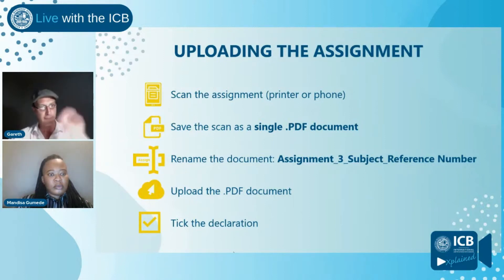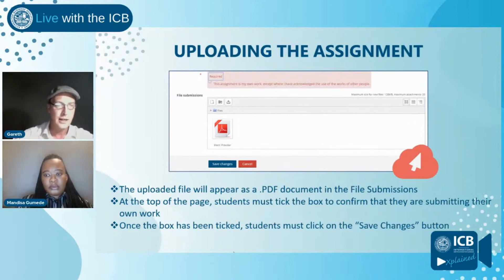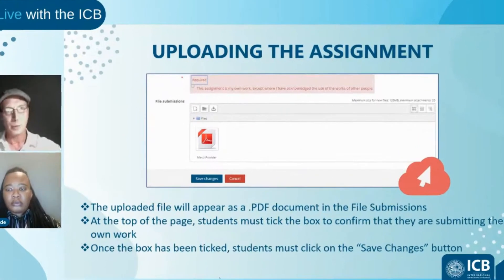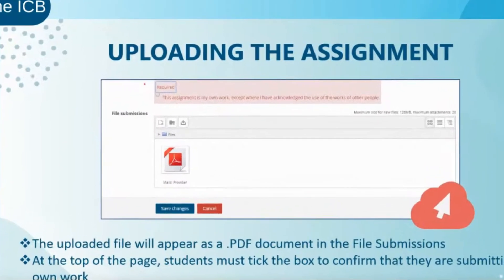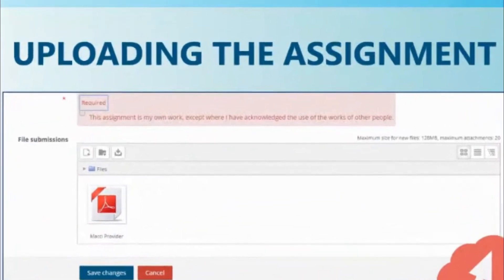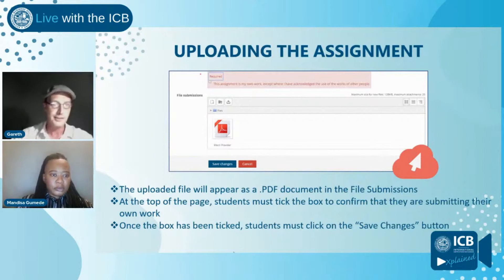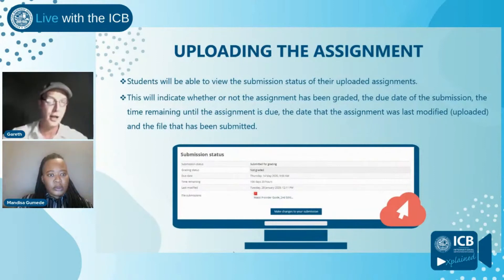Once all of that is done, you can upload the document. On your POE online, it clearly indicates where to upload. Your screen will show a large white block labelled 'file submissions' with your PDF file and its name. Above that there is a pink block with a small checkbox — ticking this box confirms that this is your own work, that you have not plagiarized or copied anyone, and that no one has helped you with the assignment. If you do not tick this declaration box, you will not be able to submit. Then click the blue 'save changes' button at the bottom.